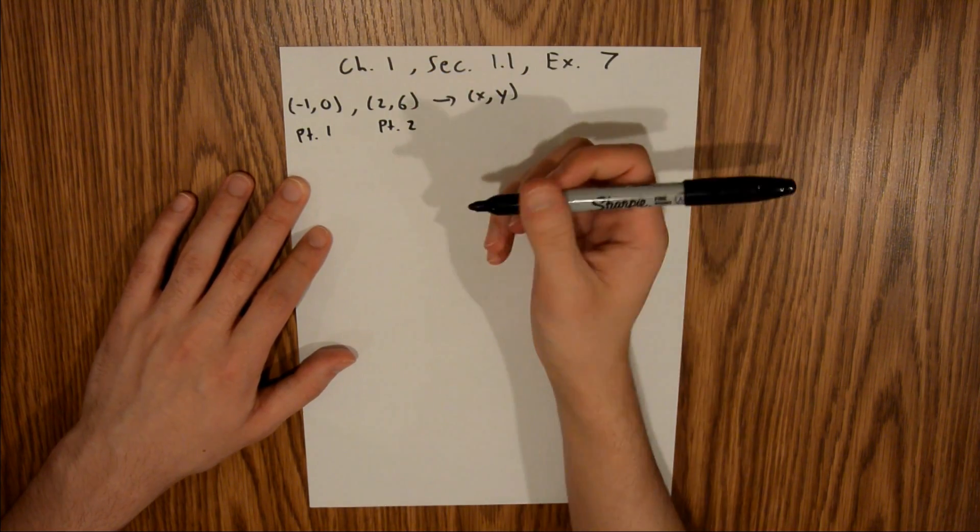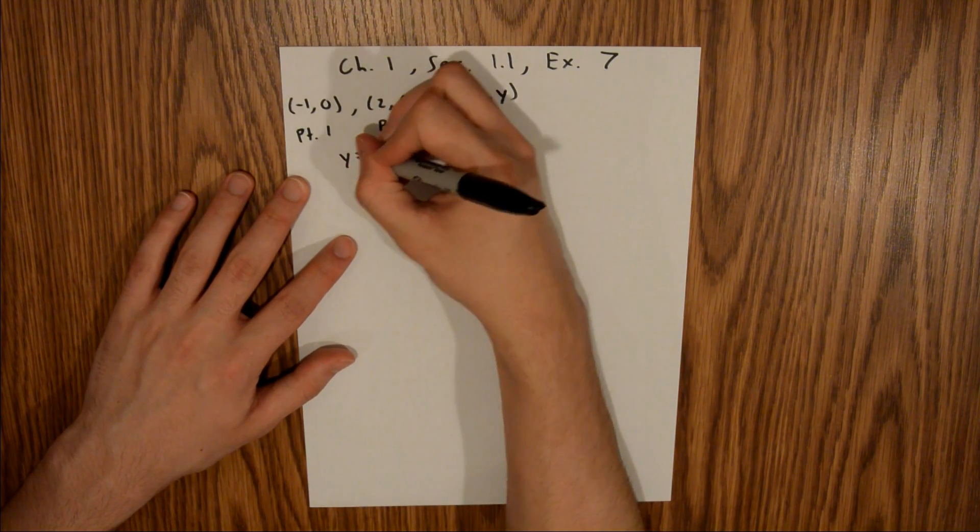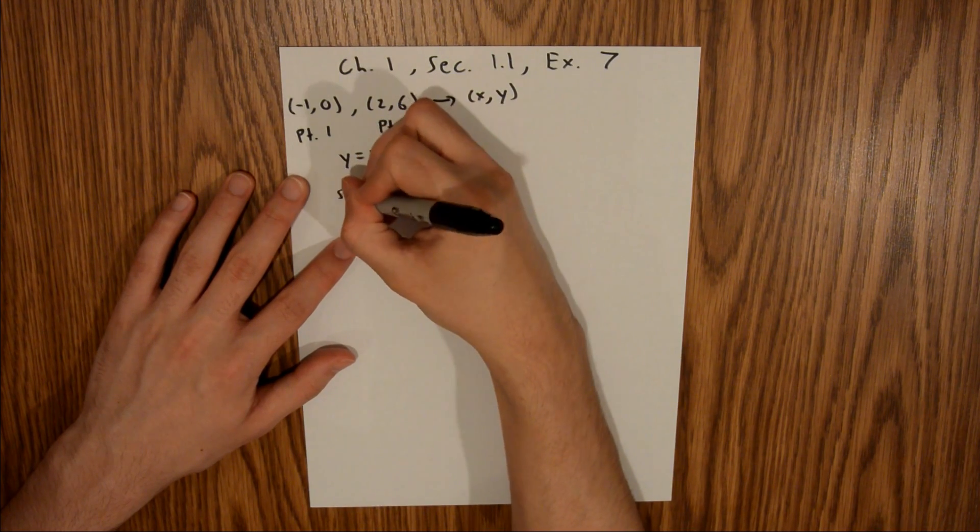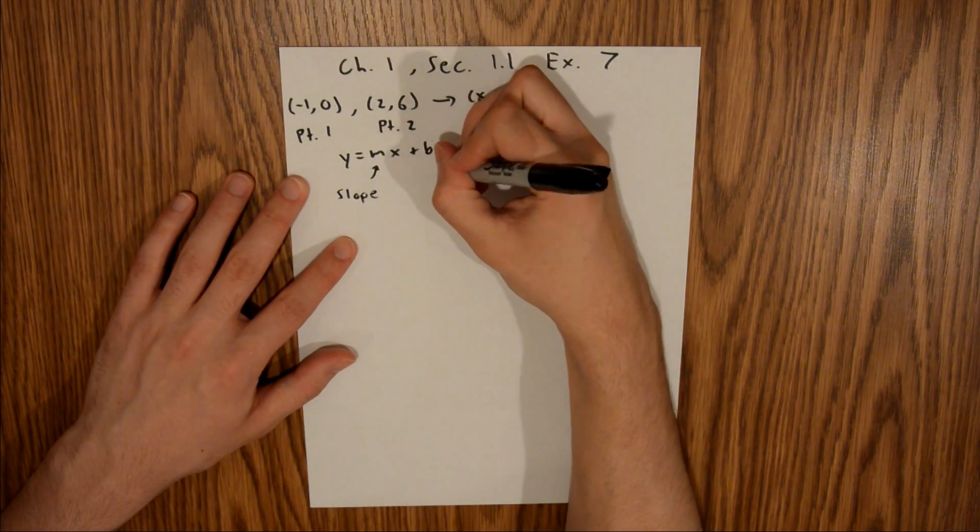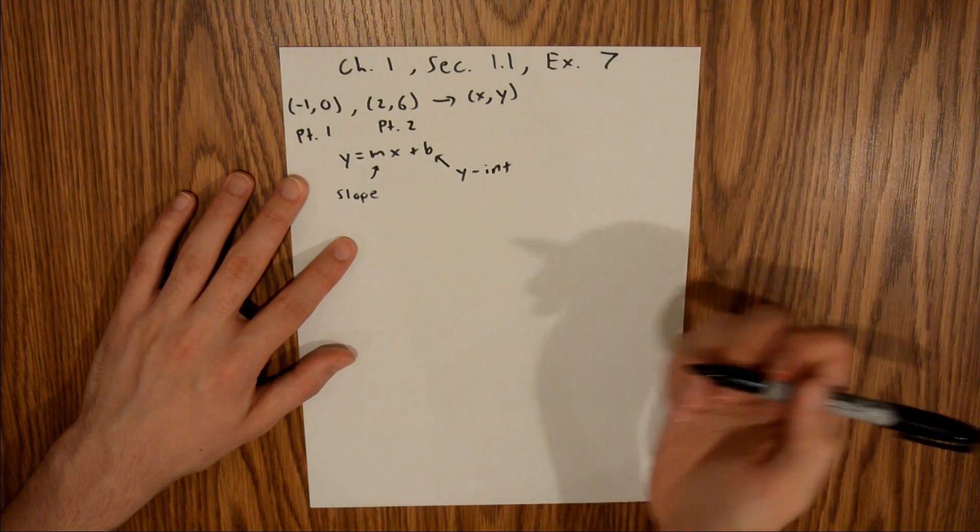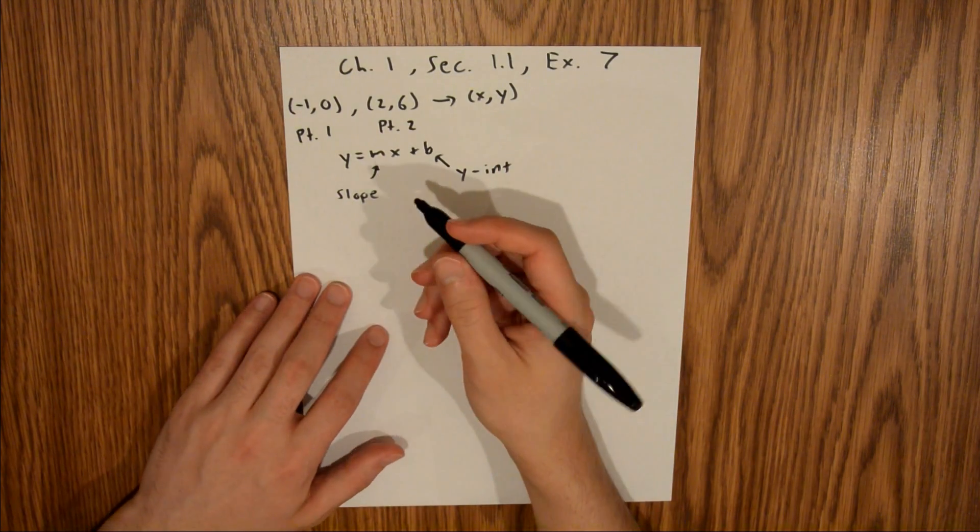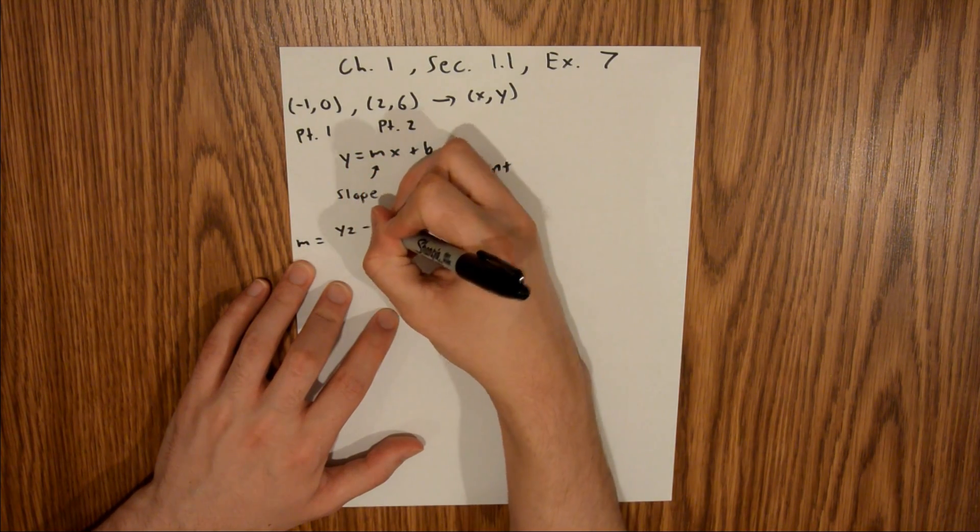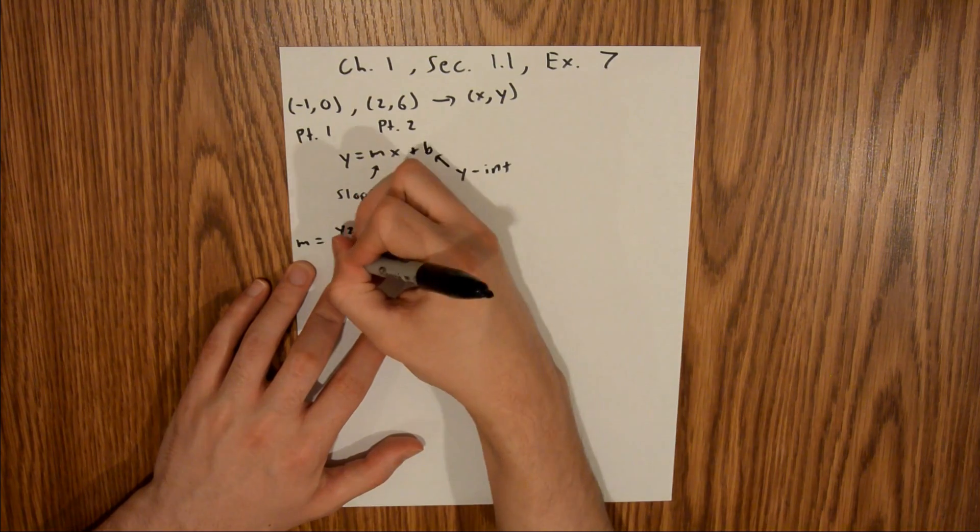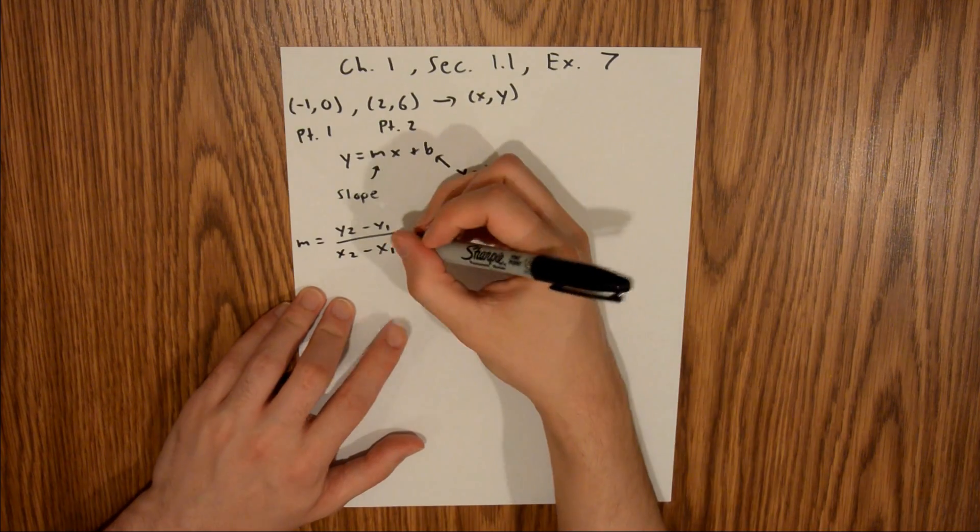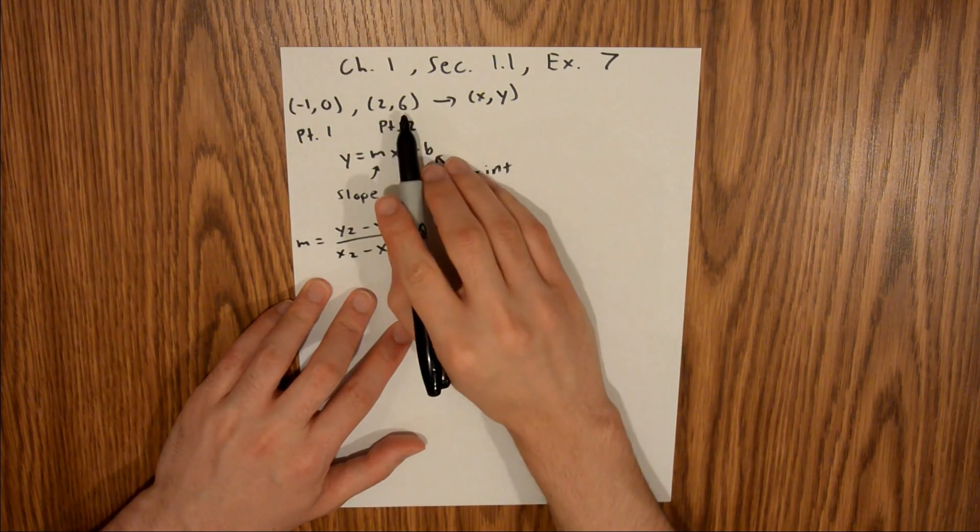The generic equation for a line is y = mx + b, where m is your slope and b is your y-intercept. We have all the information we need to calculate the slope. Your slope is equal to (y2 - y1)/(x2 - x1). Your 1 and 2 here correspond to point 1 and point 2. So this is going to be equal to y2, which is 6, minus y1, which is 0,